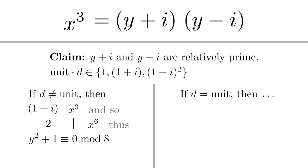This is a problem. There aren't any squares which are 7 mod 8, and consequently y² + 1 cannot be 0 mod 8 for any integer y. As a result, our assumption that d was not a unit must have been false. On the contrary, it must actually be that d is a unit.